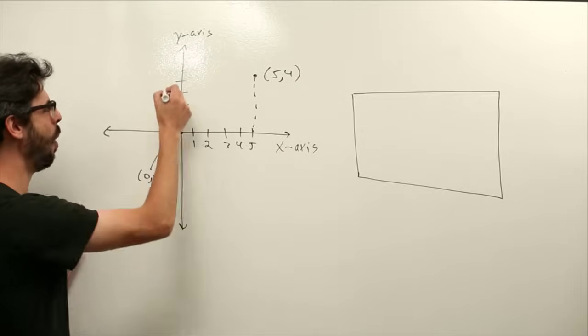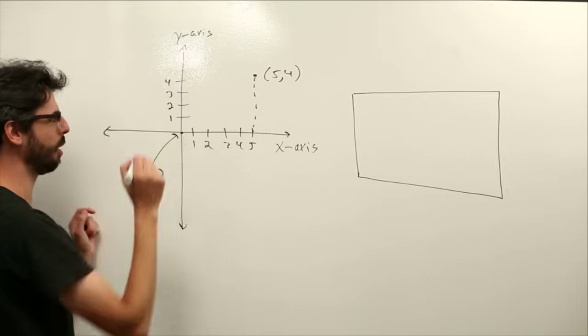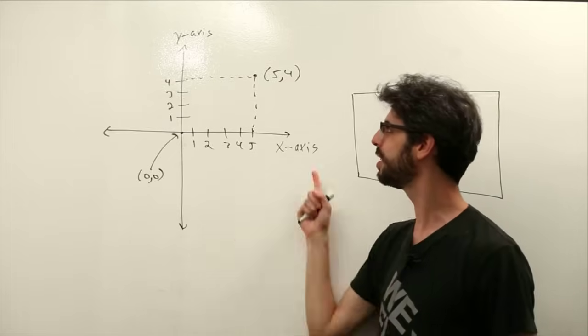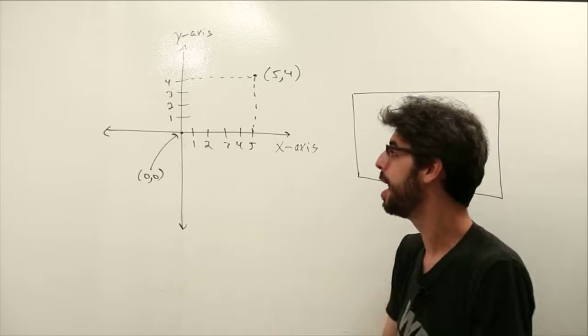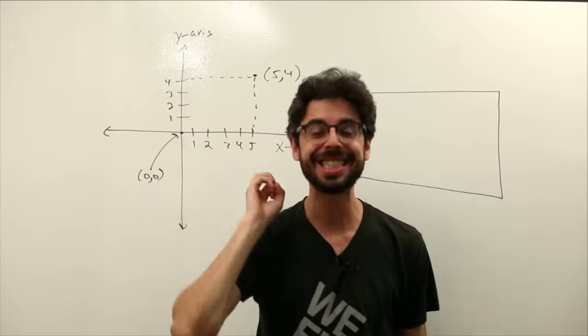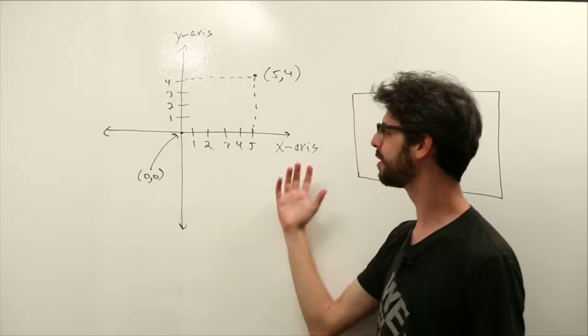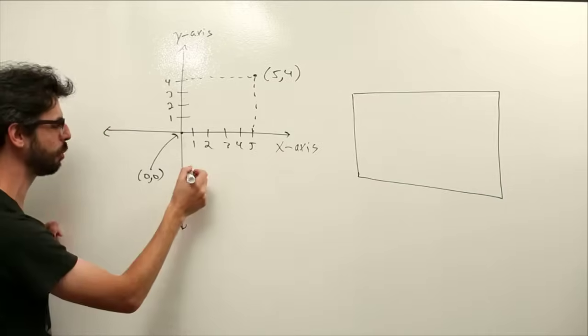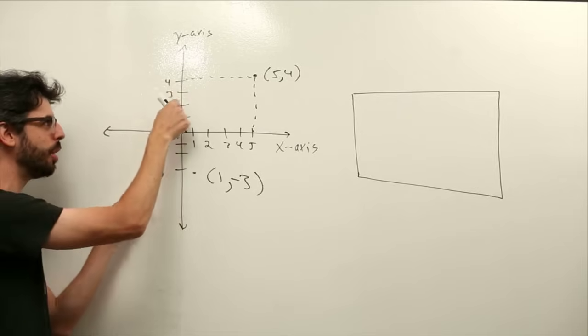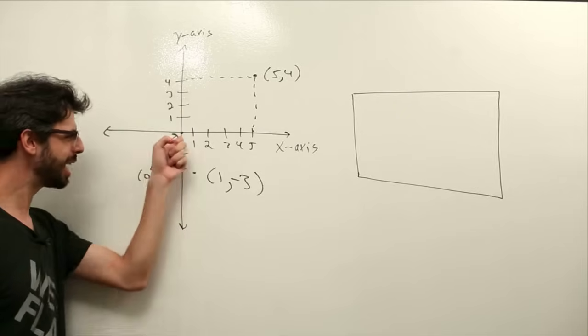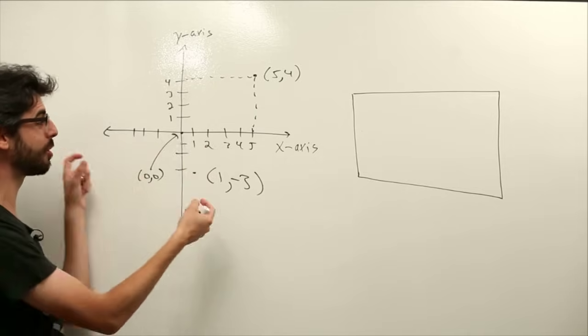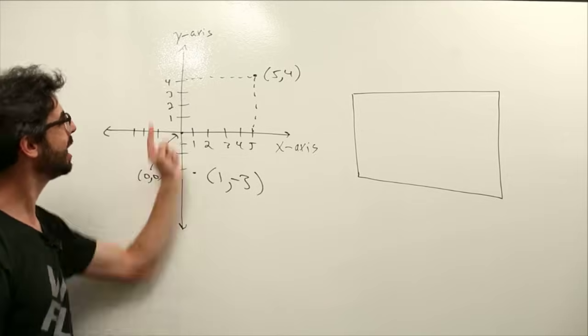This should feel somewhat intuitive, somewhat familiar to you. You have this coordinate system, and we can locate spots on the coordinate system by their numeric horizontal value x and their numeric vertical value y. This point here is 1 comma negative 3. Negative points down: negative 1, negative 2, negative 3. We have this idea of this coordinate system with 0, 0 in the center, positive x going to the right, positive y going up.